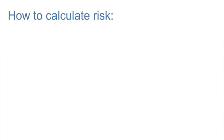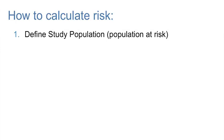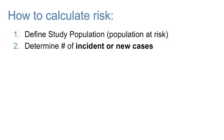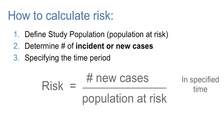Next, we will discuss how risk is actually calculated. In order to calculate risk, we must define our study population, or the population at risk, then determine the number of incident or new cases of the health outcome or disease, and specify the time period. The formula is: risk equals the number of new cases of the health outcome divided by the population at risk during a specified time period.